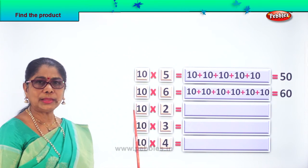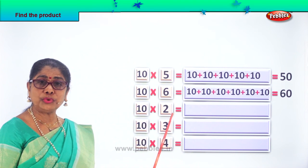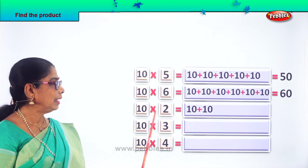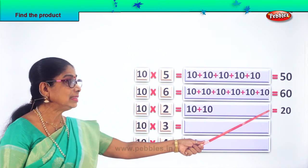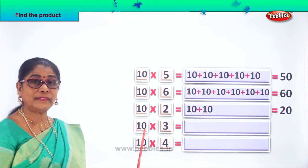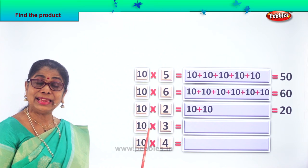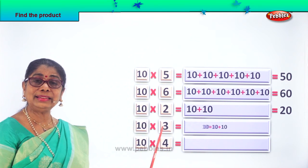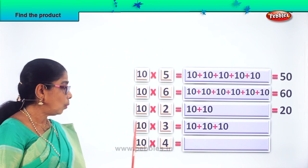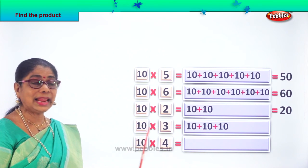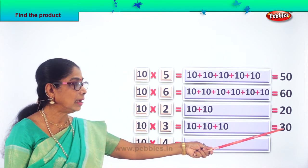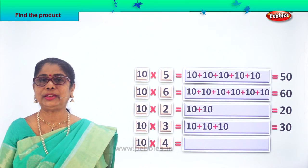Next, find the product of 10 into 2. What are 10 twos? 10 twos are 10 plus 10. What is 10 plus 10? 10 twos are 20 — equal to 20. Then, find the product of 10 into 3. What is 10 into 3? 10 threes — 10 three times: 10 plus 10 plus 10. What is the product of 10 into 3? 10 threes are equal to 30.